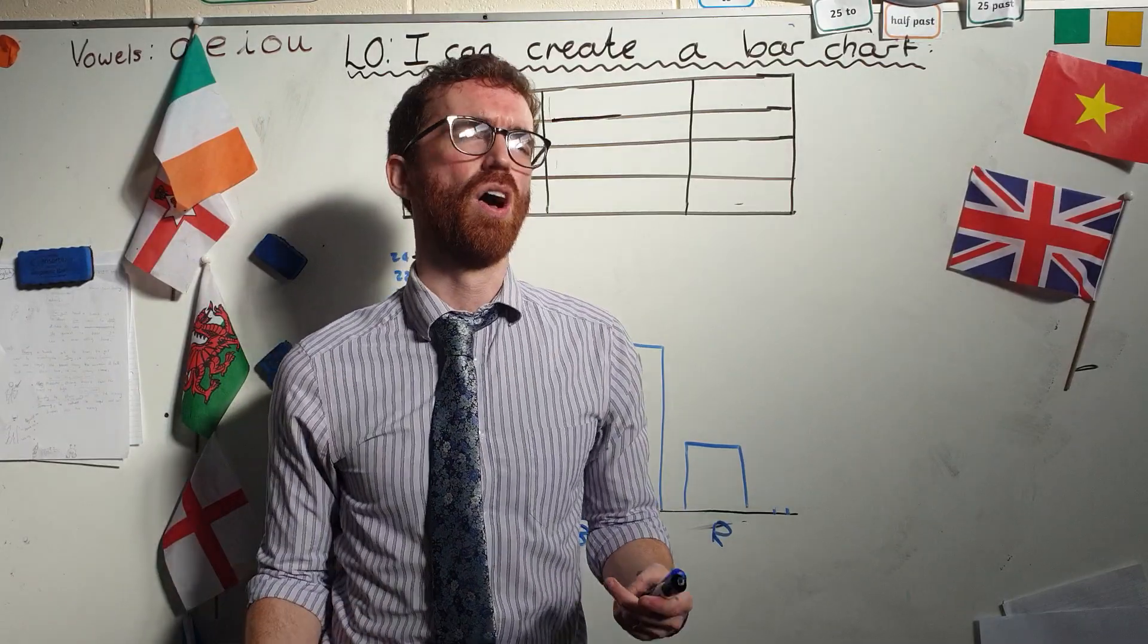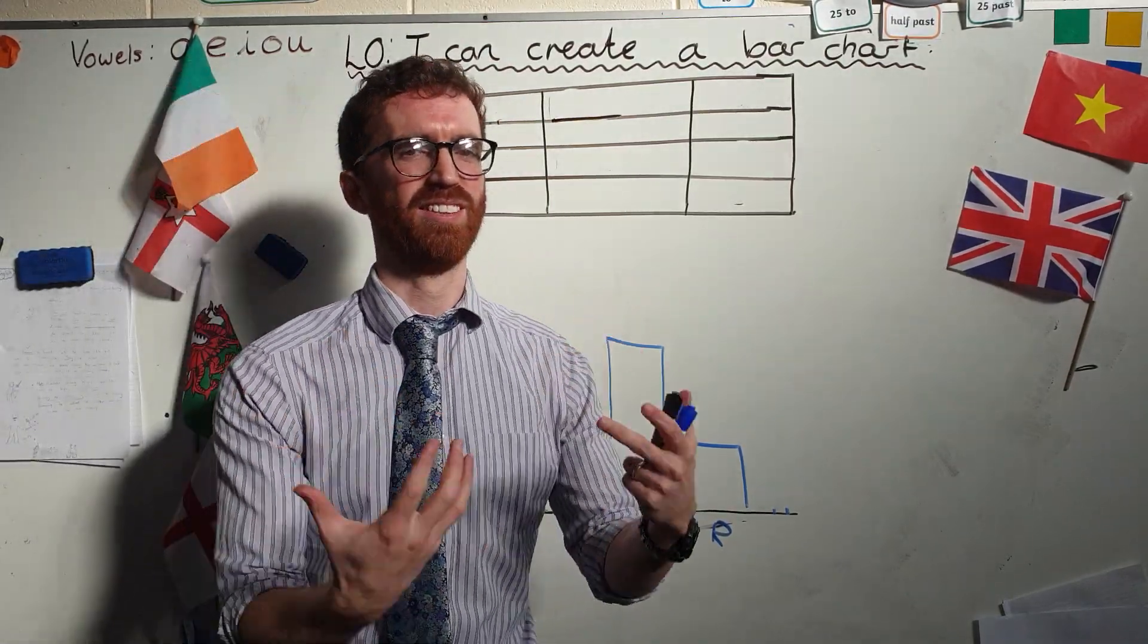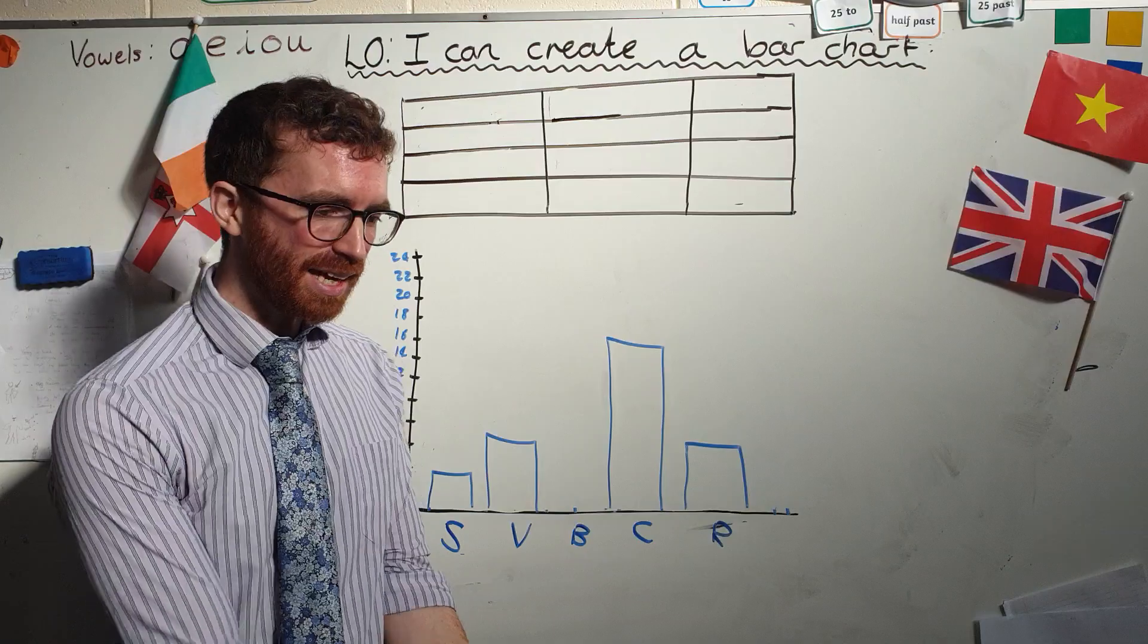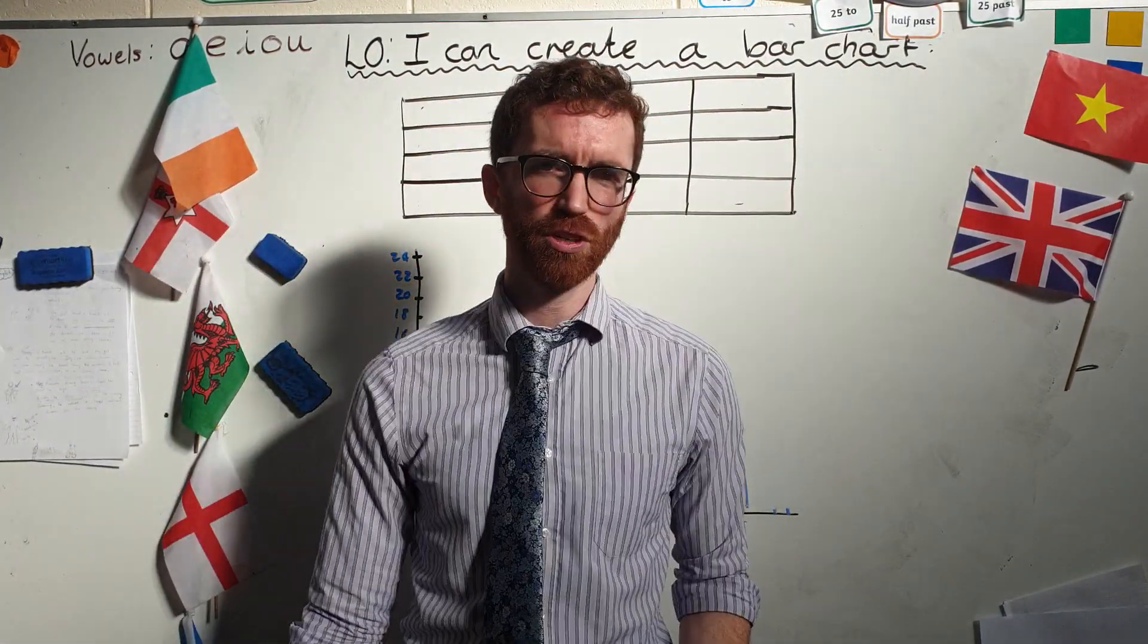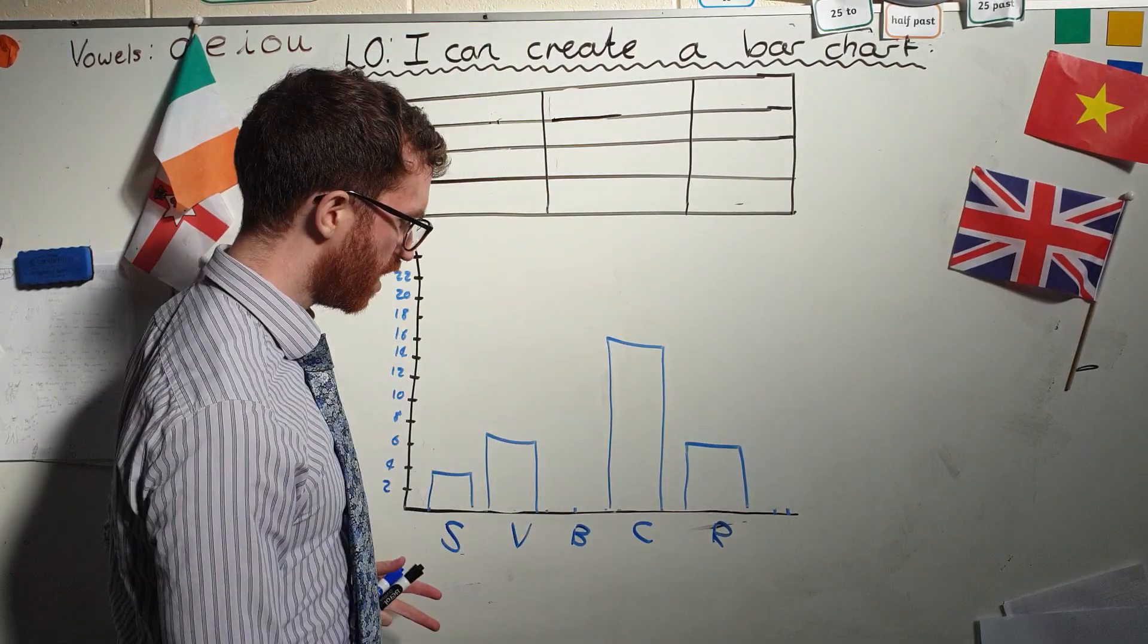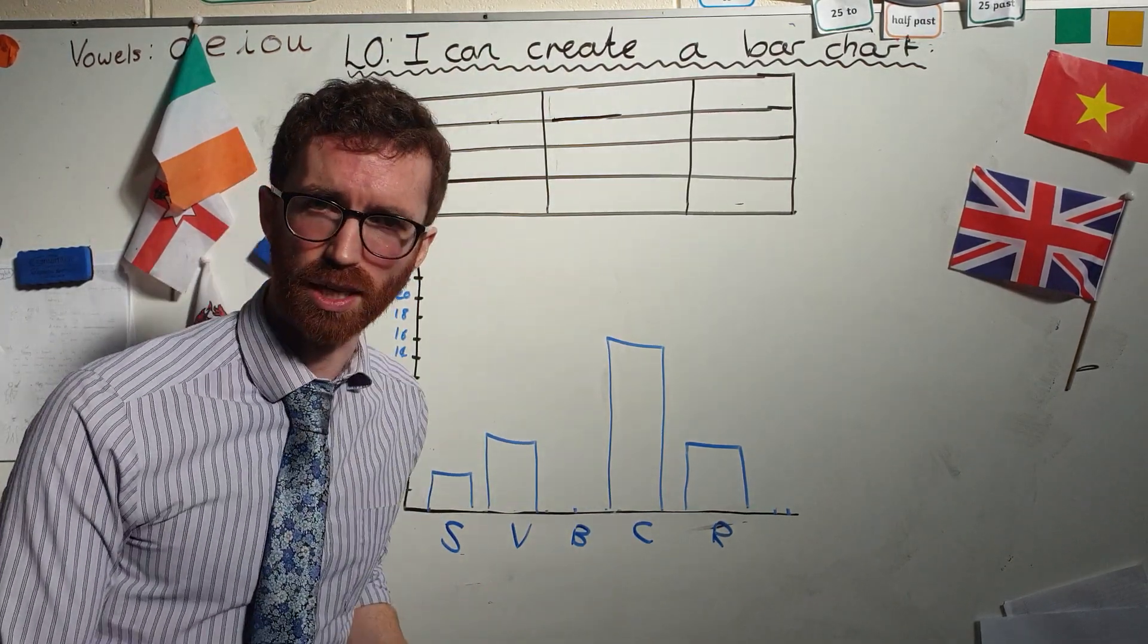A bar chart is a way of expressing data. What on earth do you mean by that, Mr. John? Well, let's say I've got some information and I want to give it to you. So for example, here is my information.